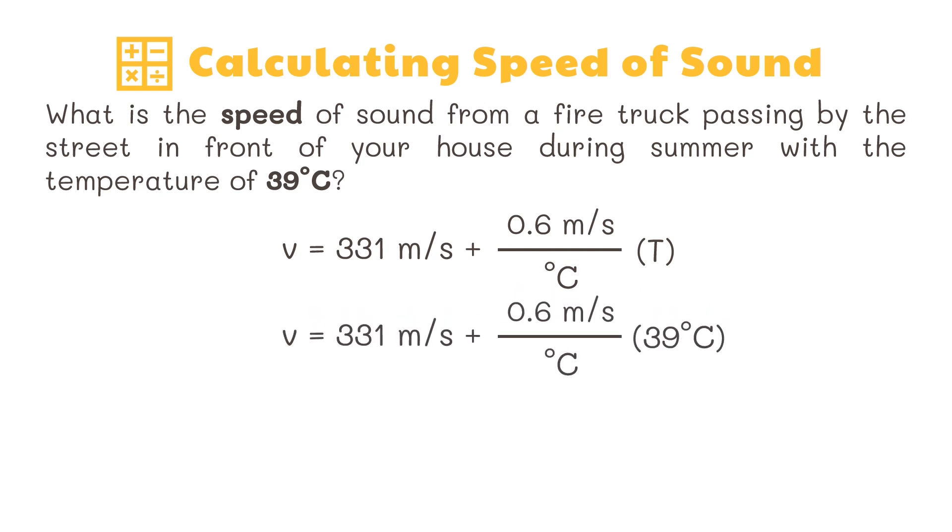We can cancel out similar units such as the degree Celsius. 0.6 meters per second times 39 is equal to 23.4 meters per second. 331 meters per second plus 23.4 meters per second equals 354.4 meters per second.